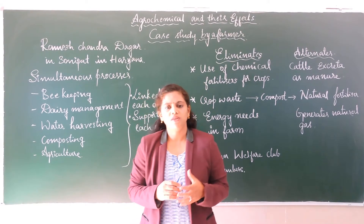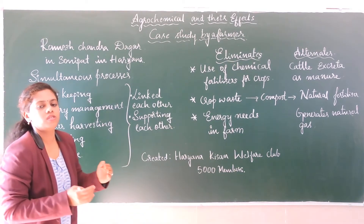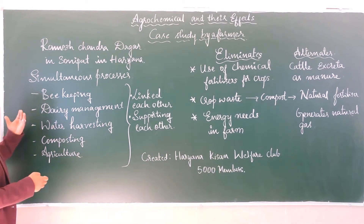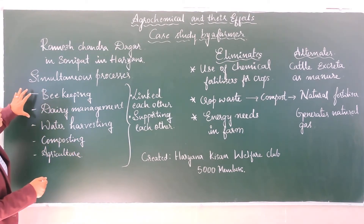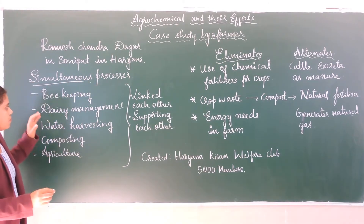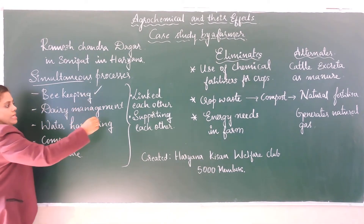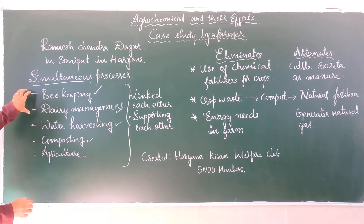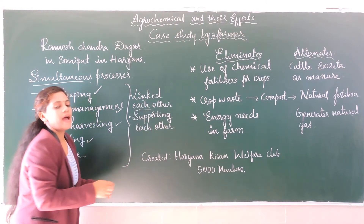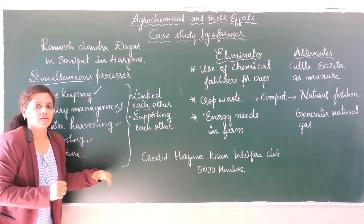Let us see how farmer Ramesh Chandra Dagar from Haryana used organic farming. He used several processes simultaneously — bee keeping, dairy management, water harvesting, composting, and agriculture. All these processes were linked to each other and supported each other.